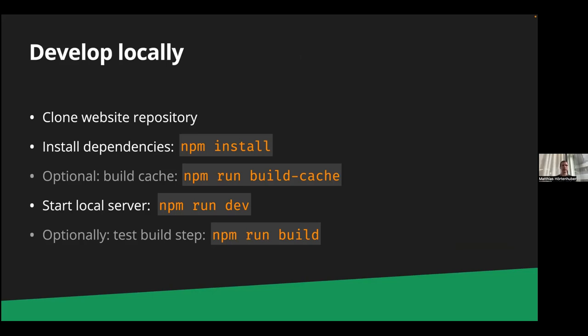If you want to give it a try locally, just clone the website repository, install the dependencies with npm install, build the cache — because we cache all pipeline and module information to save on build time — and then run npm run dev. On localhost:4321 you can see the website. If you just want to test if it still builds, you can make a pull request and let Netlify build it, or build it locally with npm run build.